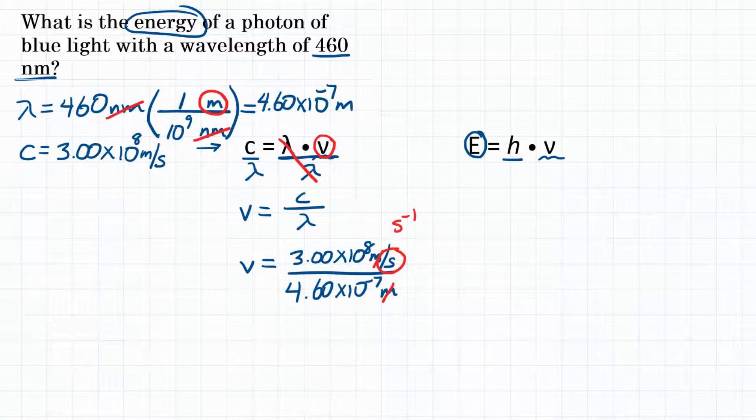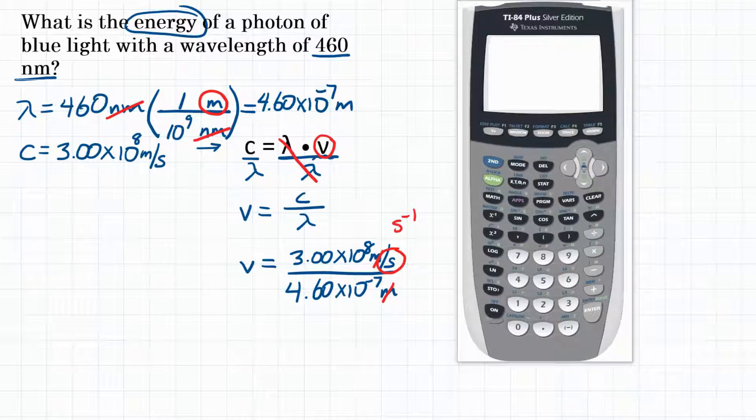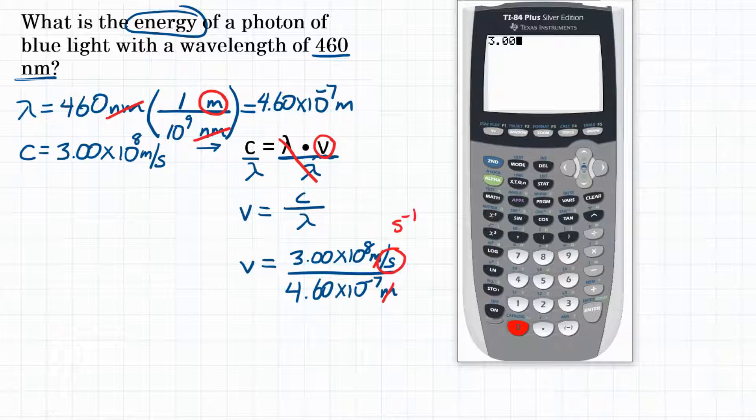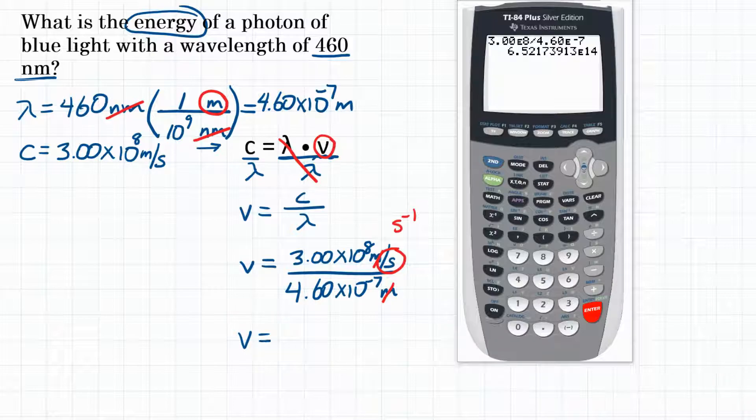Now let's plug this into our calculator and solve. You're going to punch in 3.00, and then the EE button, which is second and then the comma, and that means times 10 to the, and then we're going to do 8 for the 8th power, divided by 4.60, and then the EE button again, to the negative 7th power, and hit equals. Our calculator gives us 6.52173913 times 10 to the 14th. Let's round that to three significant figures, so 6.52 times 10 to the 14th, and our units are seconds to the negative 1 power.